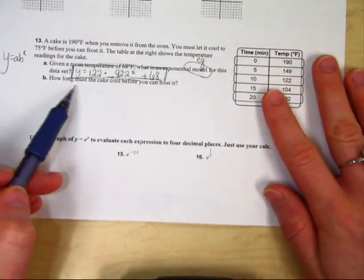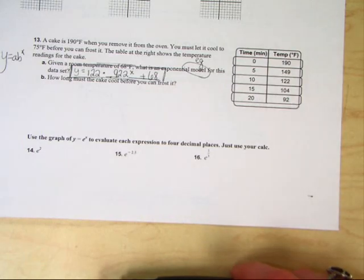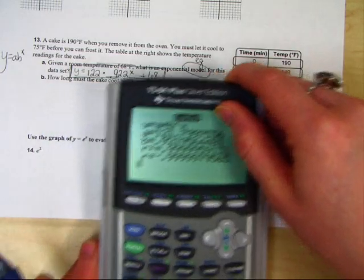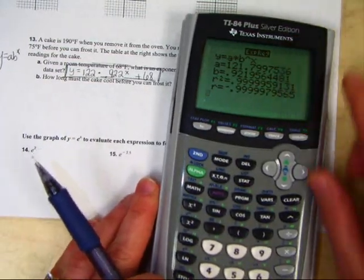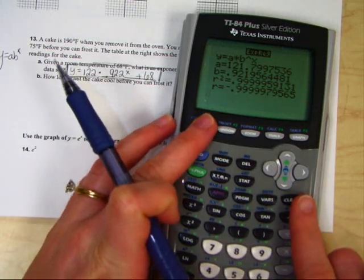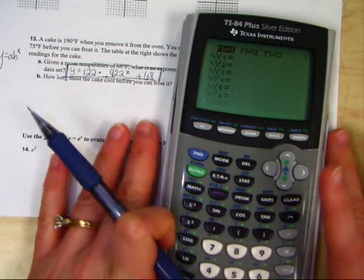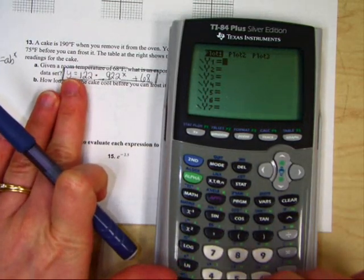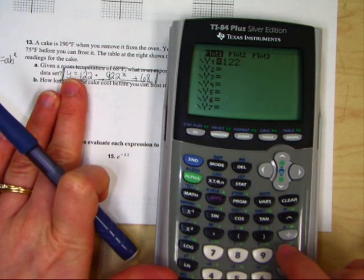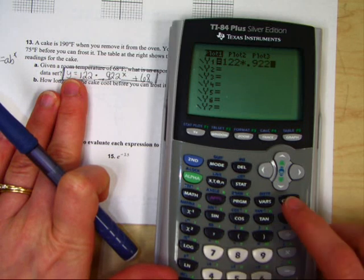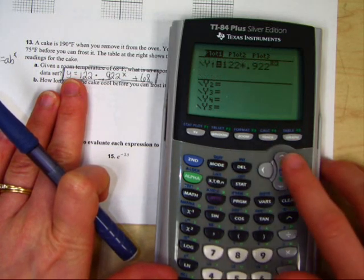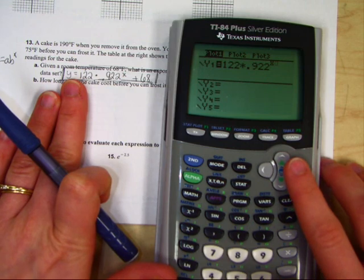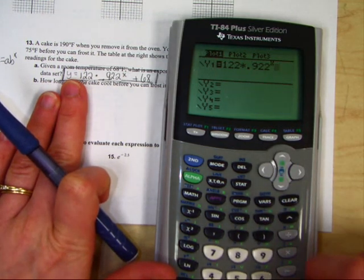Now part b says, how long should you let it cool before you frost it? That means we're going to go to your table function in your calculator. In order to do that, we need to type it in the y equals. So go to y equals. Type your equation that you just wrote down, type that equation in. 122 times 0.922 to the x, and then hit the right button so you get out of the exponent, plus 68.